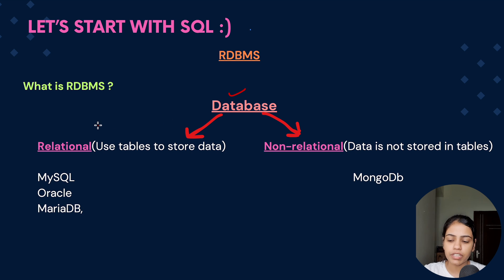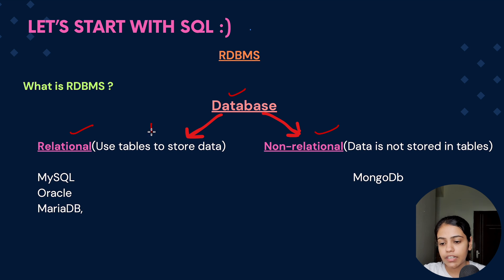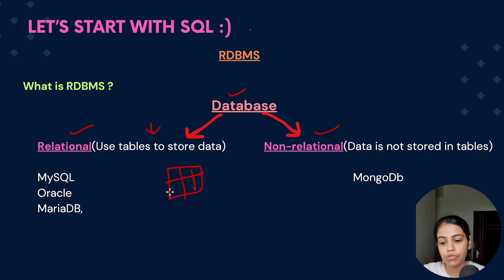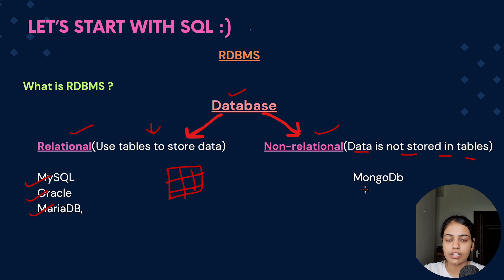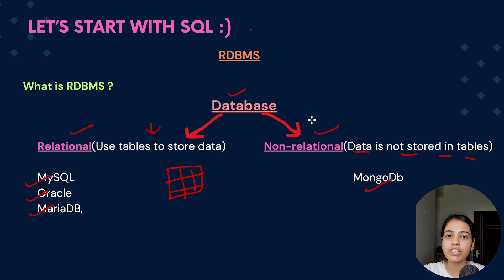Now databases are of two types: first is relational database and second is non-relational database. Relational databases basically use tables to store data, and examples are MySQL, Oracle, and MariaDB. Non-relational databases are those where data is not stored in tables — for example, MongoDB. They could store data in key-value pairs or some other pattern, but not in the form of tables.